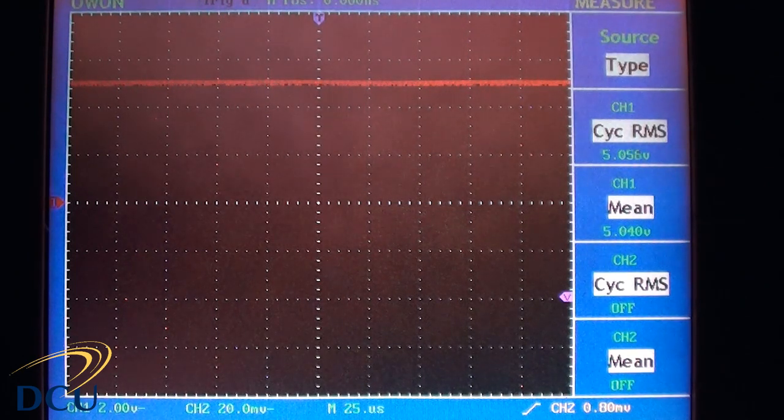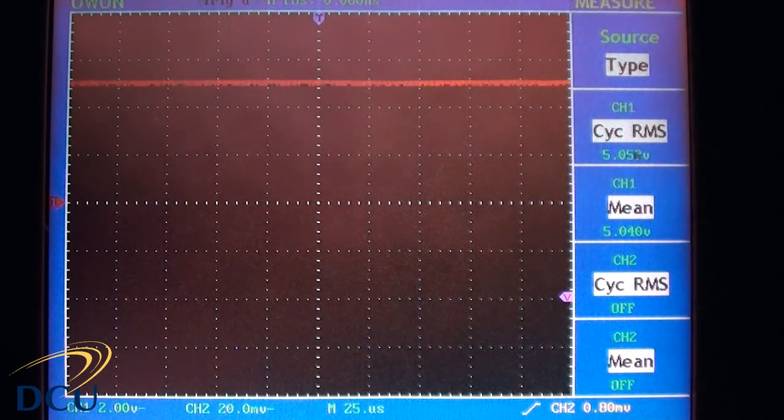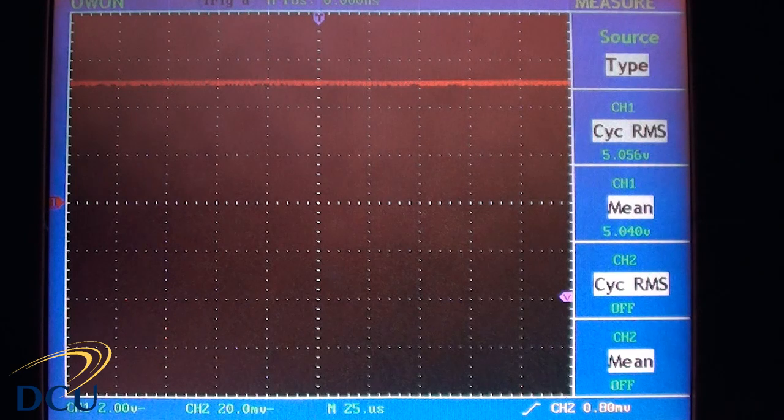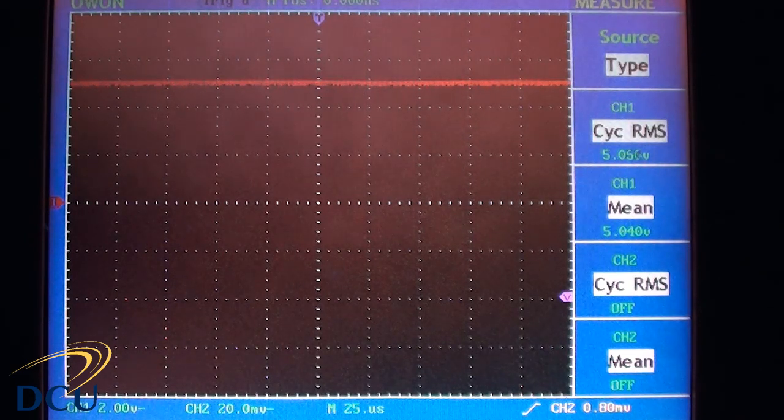You can also read that using the measure function of most oscilloscopes and here you can see that the mean and RMS value of our signal is about 5.04, 5.05 volts. This is good because the voltage output from the regulator is within about 1% of what we require.